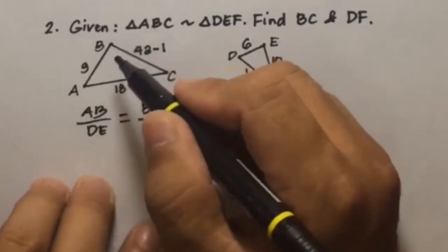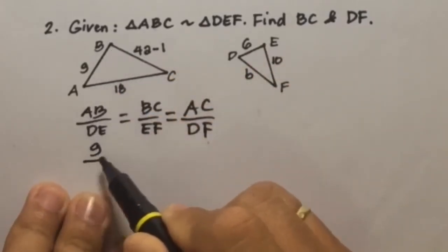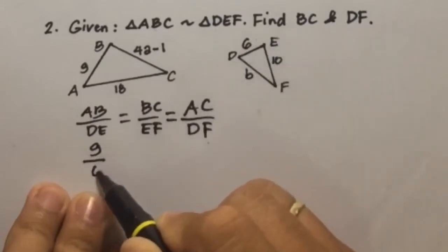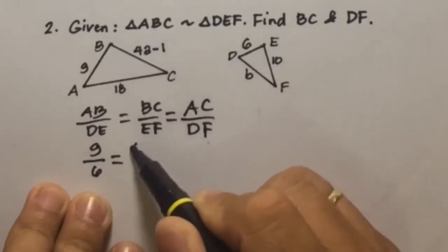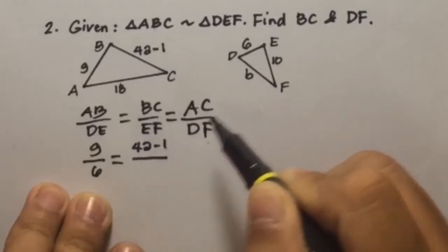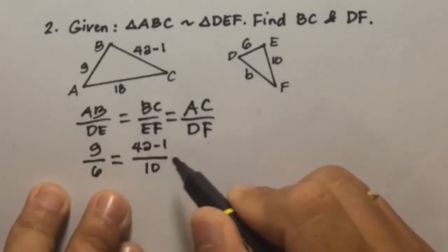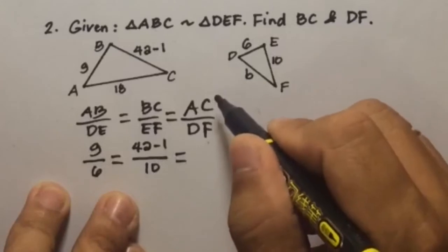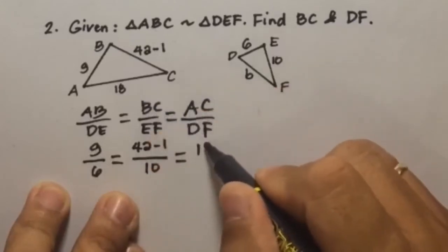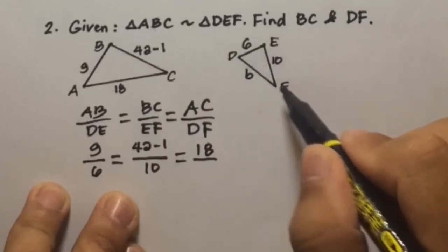Now substituting the given here, AB is 9, DE is 6, BC is 4A minus 1, then EF is 10, then AC is 18, and DF is B.